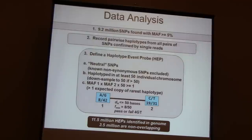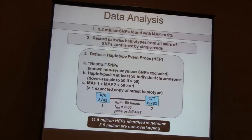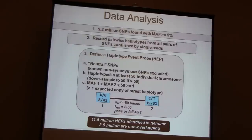From there, it's about going through the painstaking exercise of recording every single read: in which cases does that read cover two neighboring SNPs, and then identifying the haplotype for that particular read. You do that over and over again until you have analyzed all the reads, then select a subset of such events to use for your pairs. I define this as a haplotype event probe, or HEP.